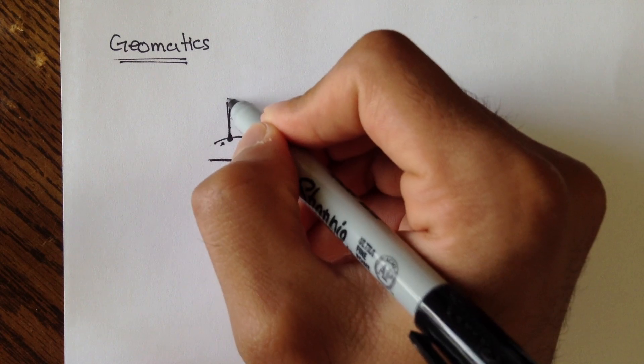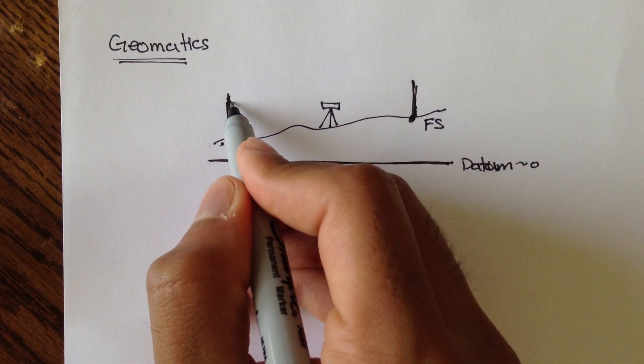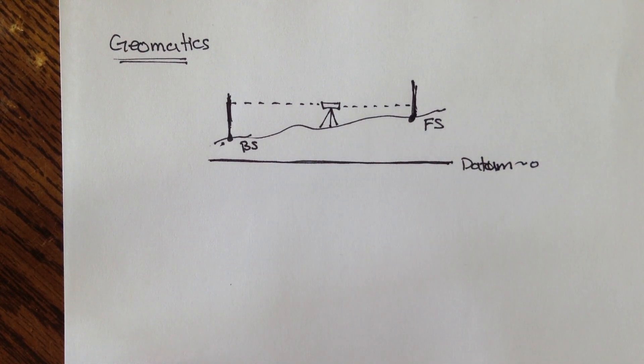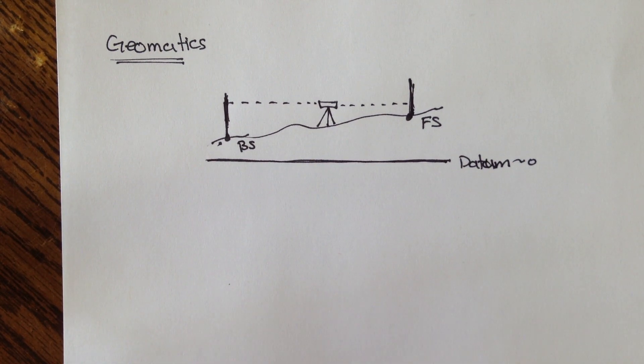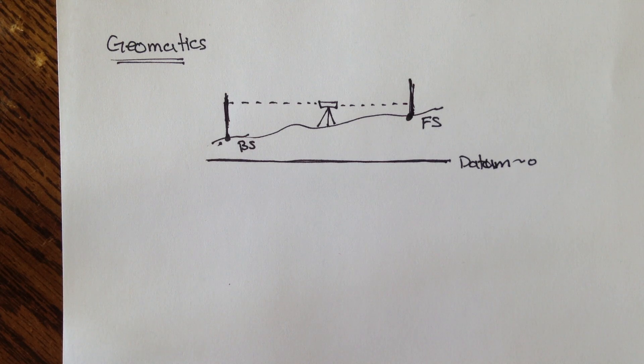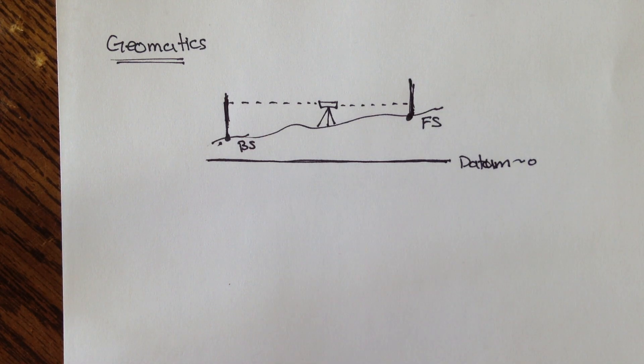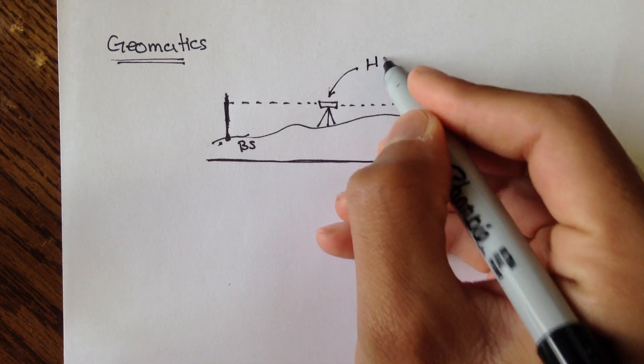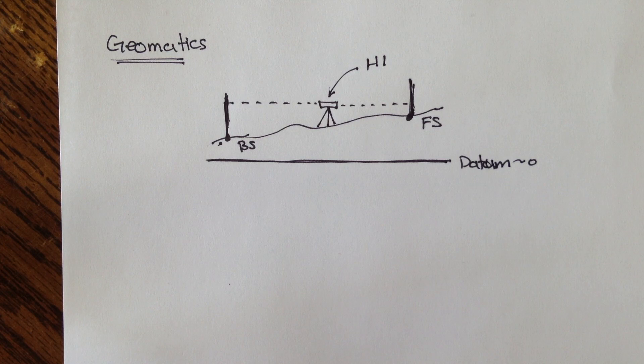And in differential leveling, you would read one measurement for the backsight and one measurement for the foresight. And from this information, you could actually figure out what the height of the instrument was. So I'll call HI represents height of the instrument.